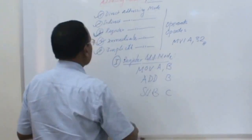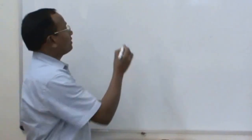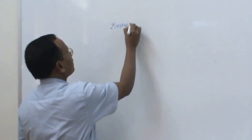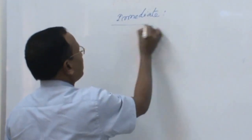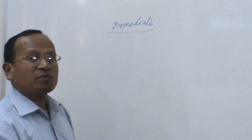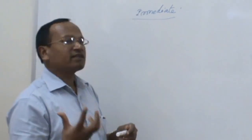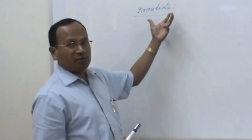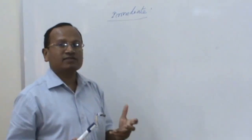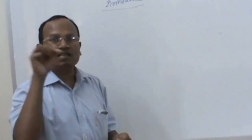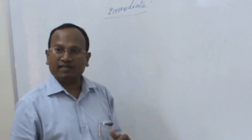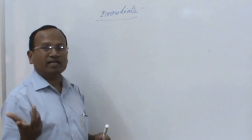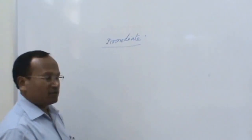Let us discuss immediate addressing mode. In terms of microprocessors, 'immediate' is the term used for 8-bit and 16-bit data, that is, immediate data. Normally, in all instructions where 'I' is present in the mnemonic, they fall under the category of immediate addressing mode. Otherwise, wherever 8-bit or 16-bit data are present in the instructions, we call it immediate addressing mode.